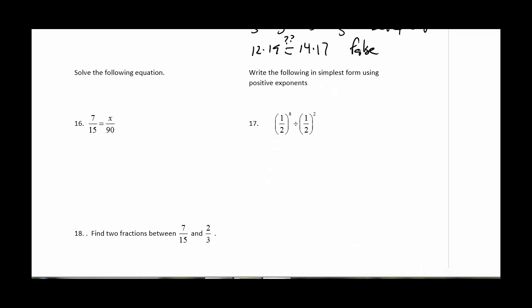Number 16, we're just solving the equation. This is an example of cross-multiply and divide. We have x equals 7 times 90 over 15. If I multiply that across, I should get 42 when all is said and done.